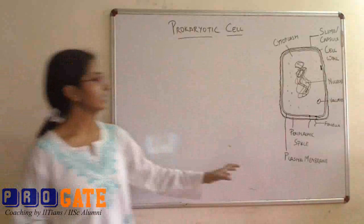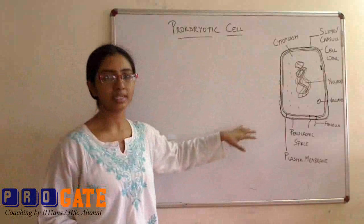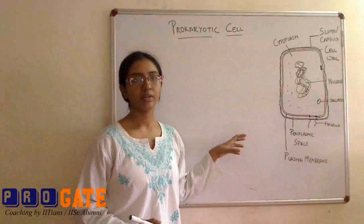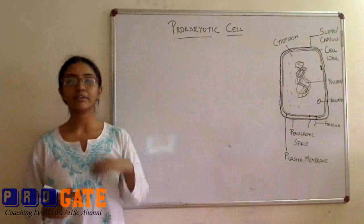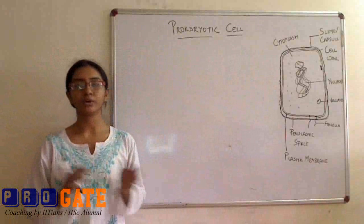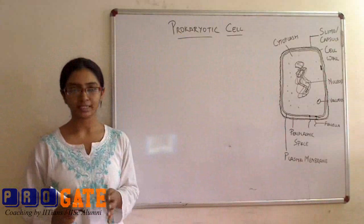So as you can see on the right side, the cell structure is drawn. Before we move on to the cell, we need to understand what are, for any basic cell, whether prokaryotic or eukaryotic, the three basic things we need to have.